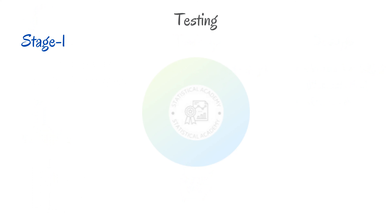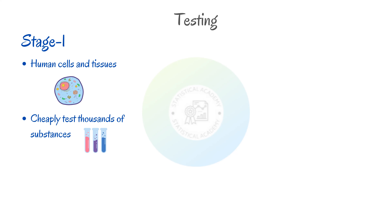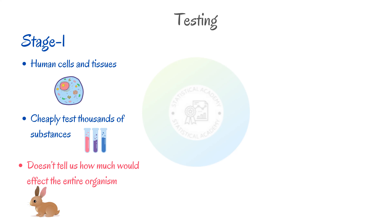In the first stage, the substance that we think is going to make a good drug is tested on human cells and tissues, which can be grown in a laboratory. The benefit of this is that we can easily and cheaply test tons of different substances. The downside is that it doesn't really tell us much about how the substance would affect an entire organism or even how it would affect a particular organ.